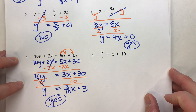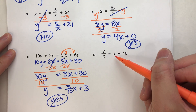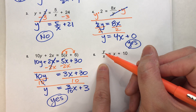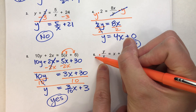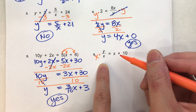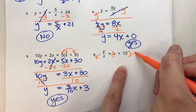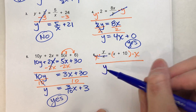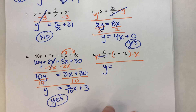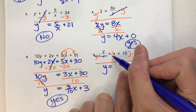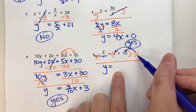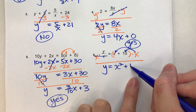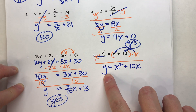Last example: y divided by x equals x plus 10. We have y being divided by x, so to get y by itself I'll multiply both sides by x. Dividing and multiplying by x undo each other, leaving y on the left. On the right, I use the distributive property: x times x is x squared, plus x times 10 is 10x. So y equals x squared plus 10x.